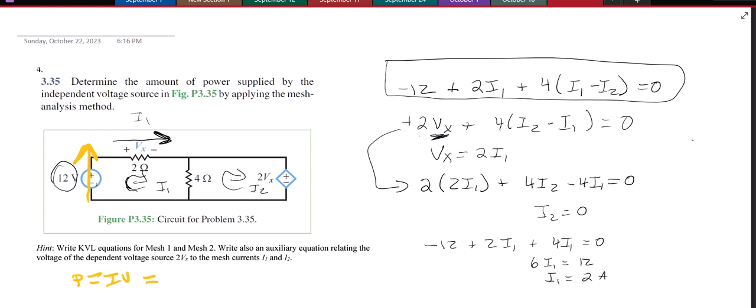So P equals IV. And I is 2 amps. Our voltage is negative 12 volts. So that's minus 24 volts.